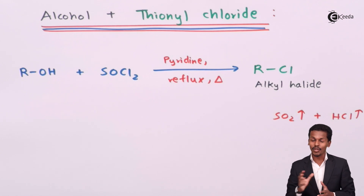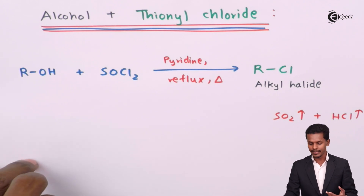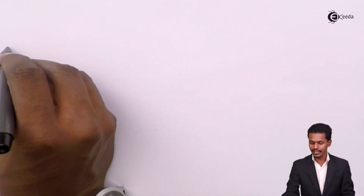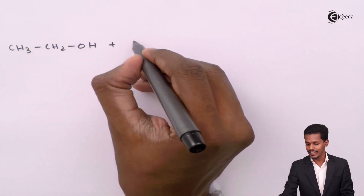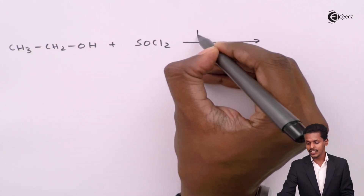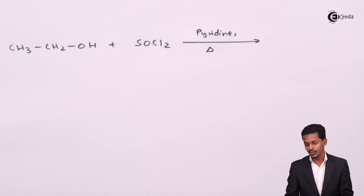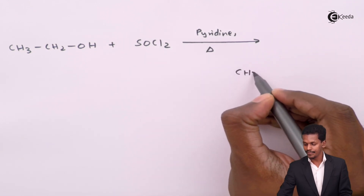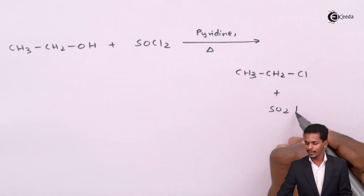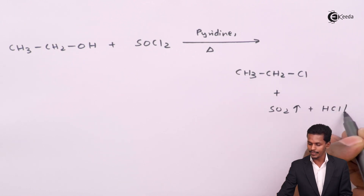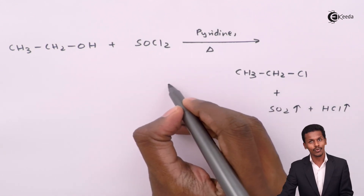For example, if we take ethanol (CH₃CH₂OH) and treat it with thionyl chloride (SOCl₂) in the presence of pyridine as solvent and reflux it, the OH is replaced by Cl. SO₂ vaporizes and HCl evaporates, and we obtain CH₃CH₂Cl — which is ethyl chloride or chloroethane.